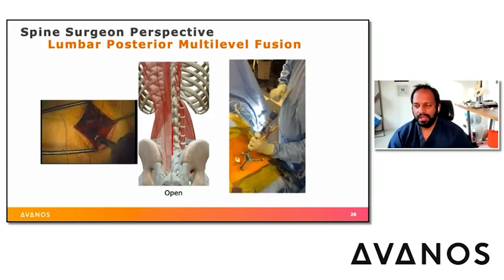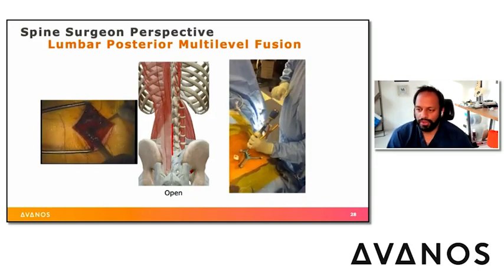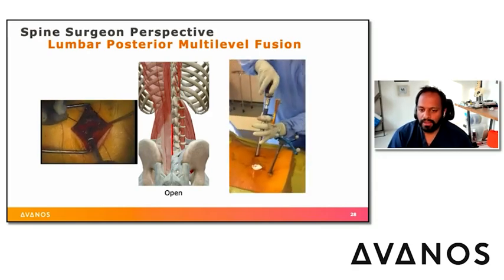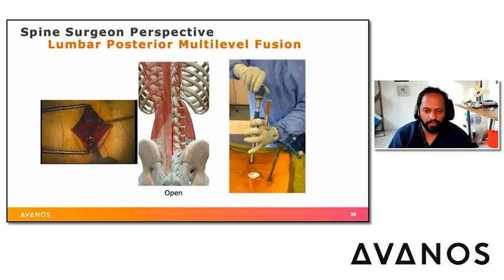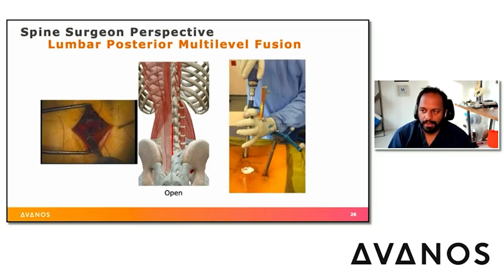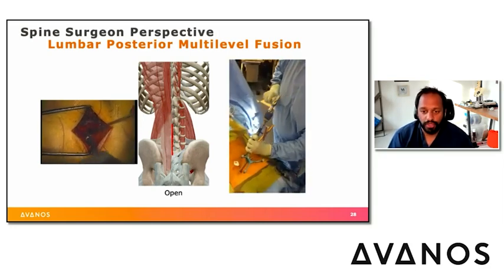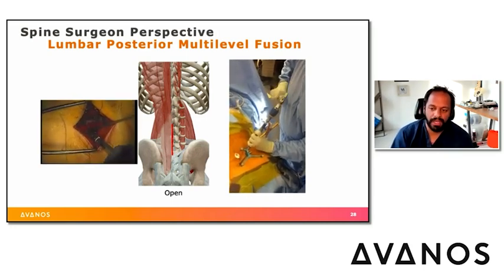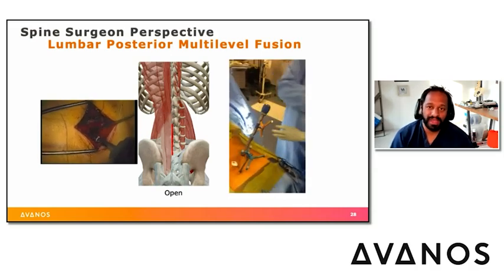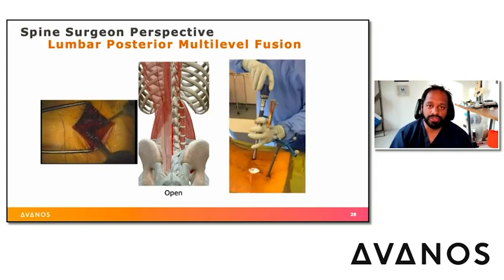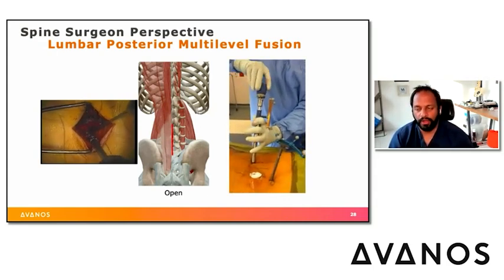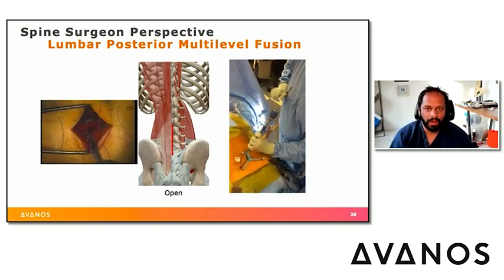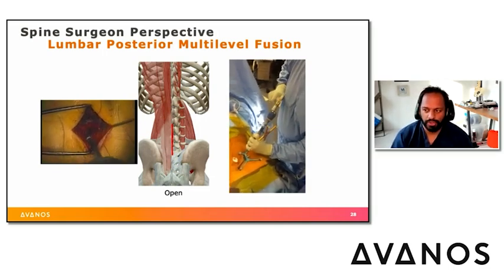For multi-level fusions, these blocks are most commonly used for three-level cases and below, though there is no firm stopping point — it depends on patient anatomy. Even 50% coverage in the upper portion of the incision is helpful. For shorter segments such as a T12 to L3 fusion, catheters can be placed above and below the surgical site. Most lumbar fusions ending at the sacrum or pelvis leave little room below, so catheters are typically placed above.